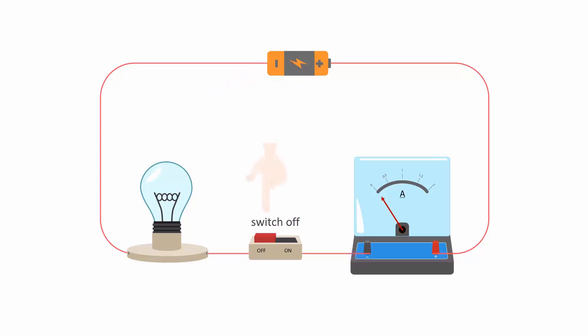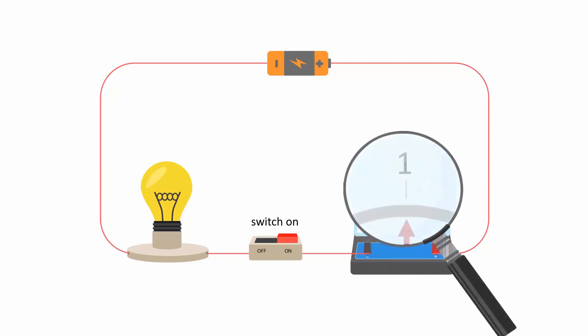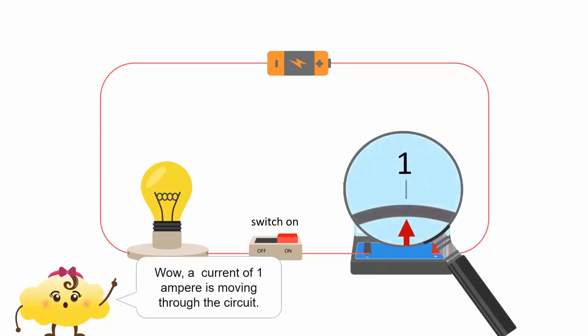When the switch is closed, the deflection of the needle shows how much current is flowing through the circuit. A current of 1 ampere is moving through the circuit.